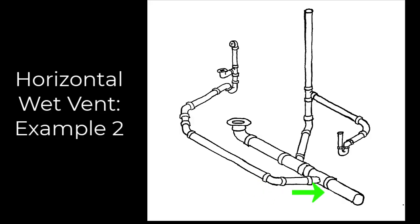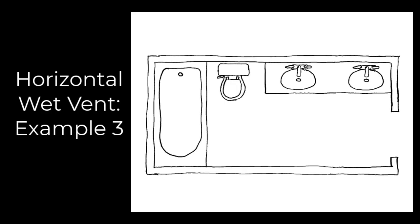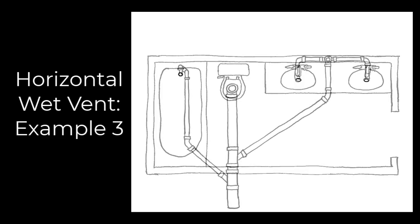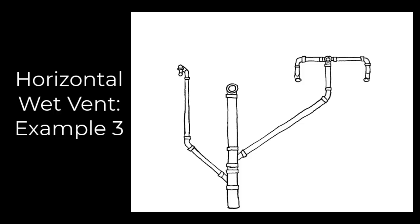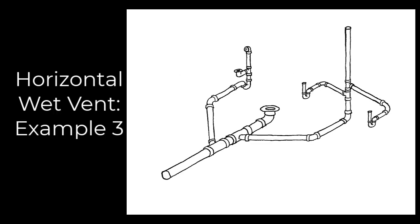Here we have horizontal wet vent example three. Let's say we have a master bathroom with two sinks — so now we have two lavatories involved. This is very similar to the last one: we're going to have the three-inch line going all the way to the toilet, with the tub branching off and the lavatory branching off. Notice that the two lavatories are common vented, and the vent from those two lavatories is also going to serve as a wet vent for the toilet and the tub as we follow that downstream.